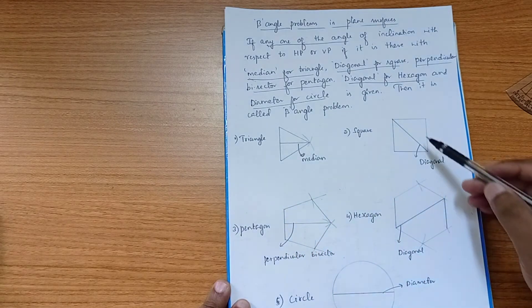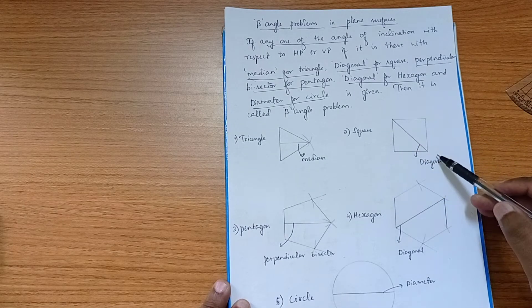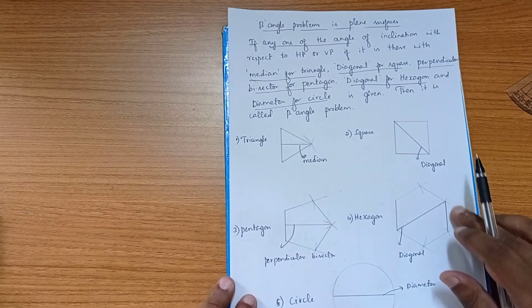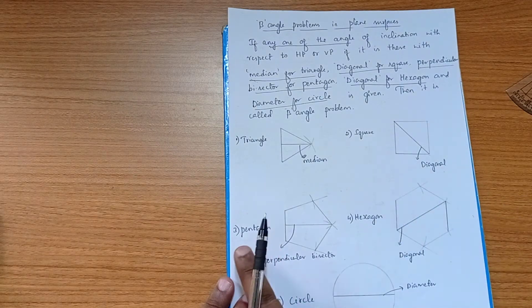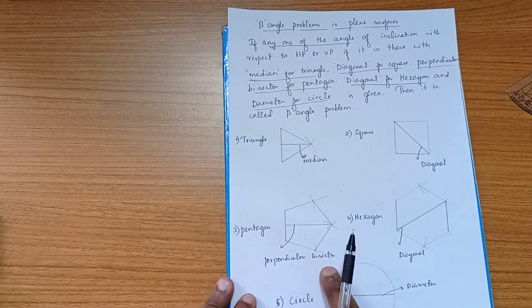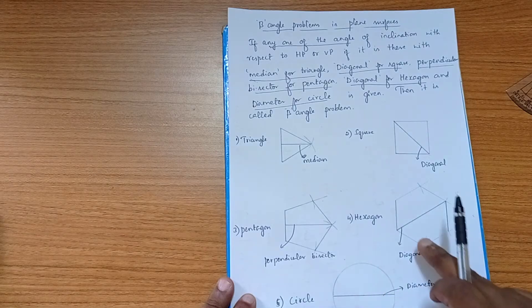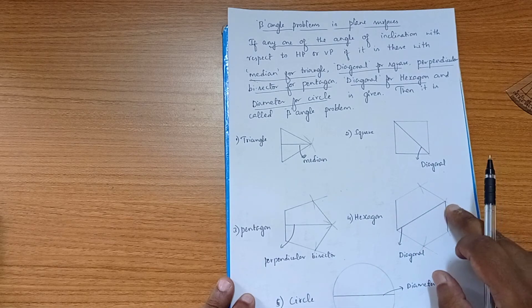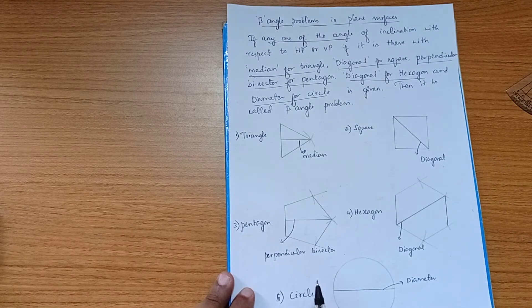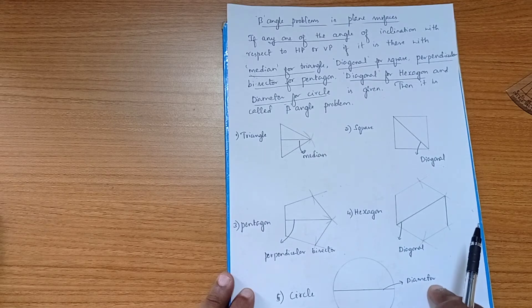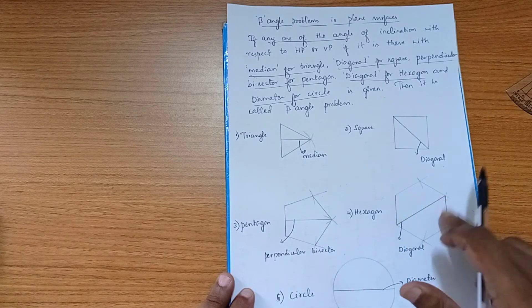For a square problem, the word 'diagonal' will be mentioned — the diagonal connects two corner points. For pentagon, the word 'perpendicular bisector' is used to indicate a beta angle problem. For hexagon, the word 'diagonal' will be mentioned. For a circle, the diameter will be given, and the angle of inclination will be specified with respect to the diameter, either to the HP or VP.